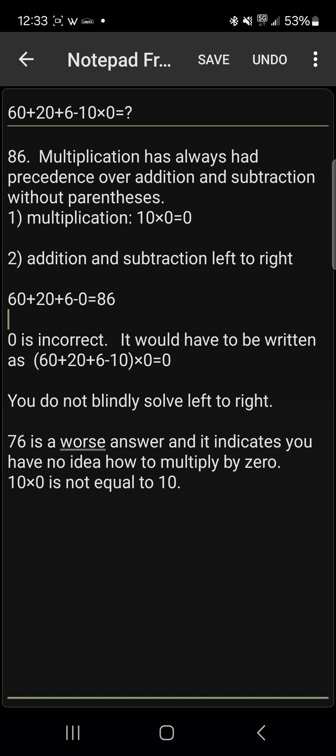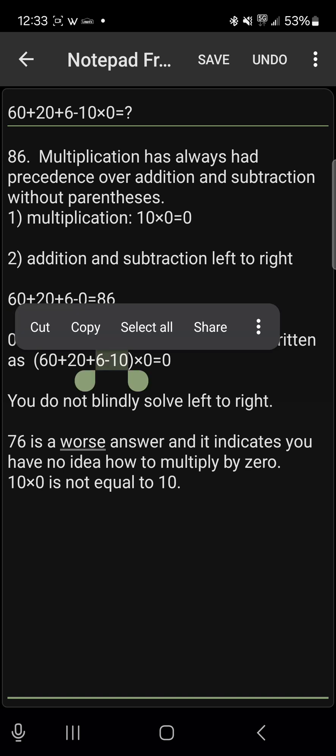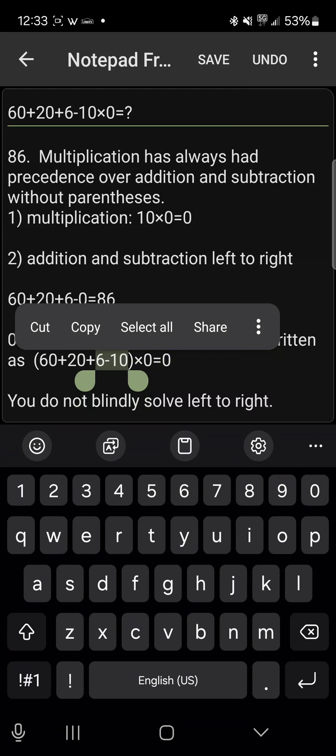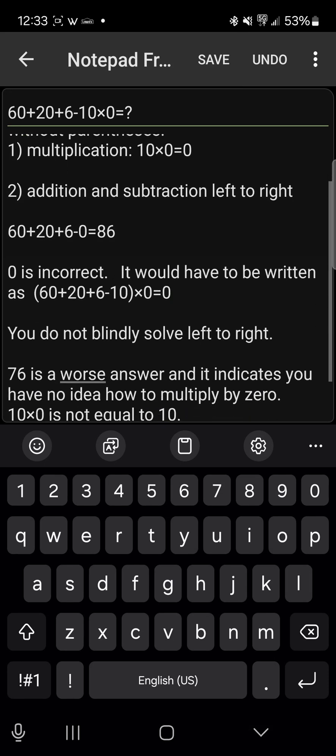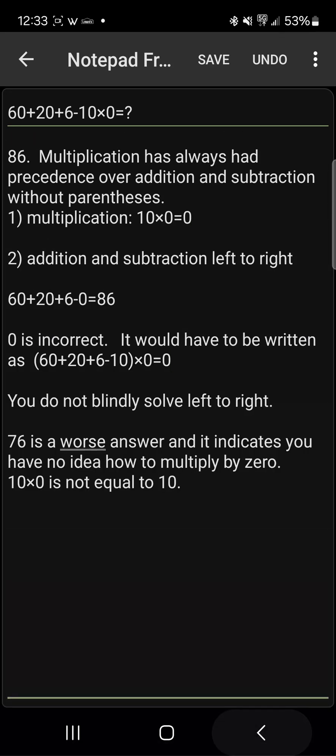It would have to be as shown right here: (60+20+6-10)×0. That's not the case, it's not written that way. You do not solve blindly left to right.